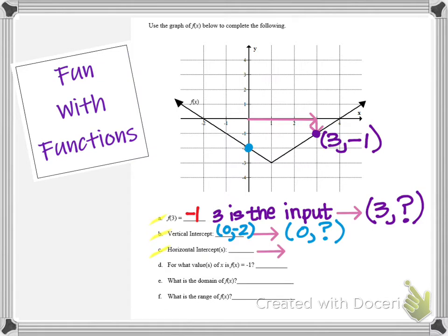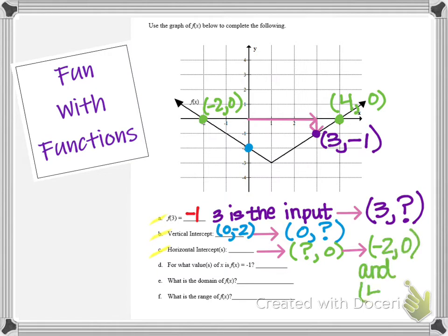Now let's take a look at the horizontal intercept or intercepts — notice there could possibly be two answers. For a horizontal intercept, the output value is 0, but we're looking for the input because a horizontal intercept is a point on the x axis. Looking at my graph, I see there is a point on the x axis at (4, 0), but there's another point on the x axis at (-2, 0). So I have two horizontal intercepts: (-2, 0) and (4, 0).